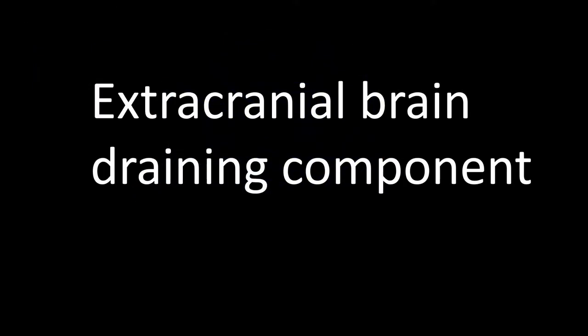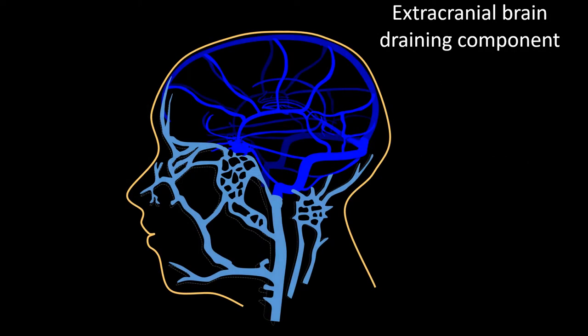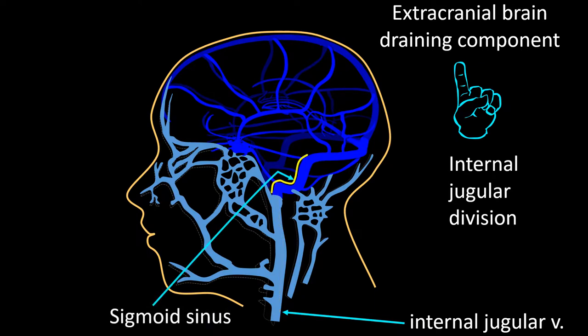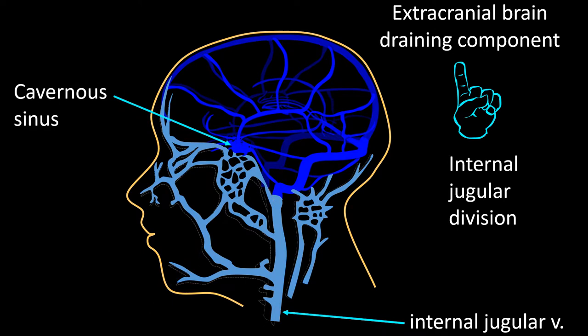I will first talk about the extracranial brain drainage component. It can be further divided into two divisions. The internal jugular division is so called because the blood in this division ultimately drains by the internal jugular vein to the heart. This division collects venous blood primarily from two sources: from the sigmoid sinus, which goes directly into the internal jugular vein, and from the cavernous sinus.